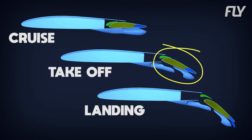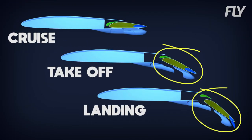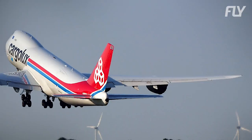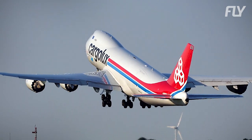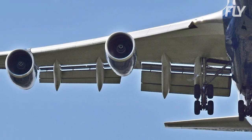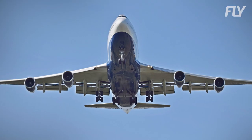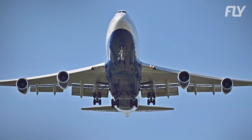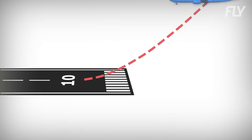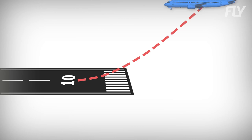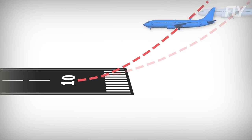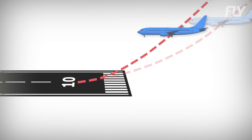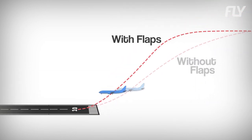It's also the reason why takeoff and landing use different flap settings. During takeoff, the flaps are not fully extended to reduce the extra drag. For landing, however, they are typically extended to their maximum setting. The extra drag actually allows you to fly a steeper descent angle to the runway, meaning the aircraft can stay at cruising altitude and speed longer before starting their descent.